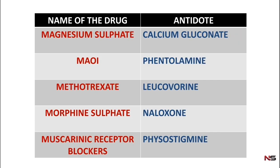For magnesium sulfate poisoning, calcium gluconate is used as an antidote. For MAO inhibitors, phentolamine is the antidote. For methotrexate, leucovorin is used. For morphine poisoning, naloxone is used as the antidote.